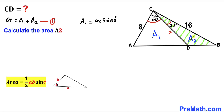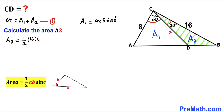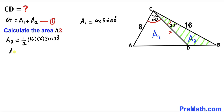Now let's calculate area A sub 2 for the other shaded triangle BCD, whose side lengths are x and 16 with an included angle of 30 degrees. So A sub 2 equals one-half times 16 times x times sine of 30 degrees, which simplifies to 8x times sine of 30 degrees.